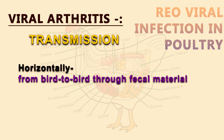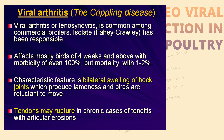The first disease is Viral Arthritis. Viral Arthritis affects birds that are 4 weeks old or above. Morbidity is 100%, meaning all birds in the flock can be affected, but mortality will be very less — only 1 to 2%.